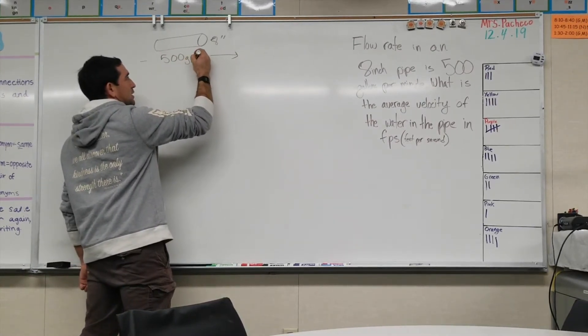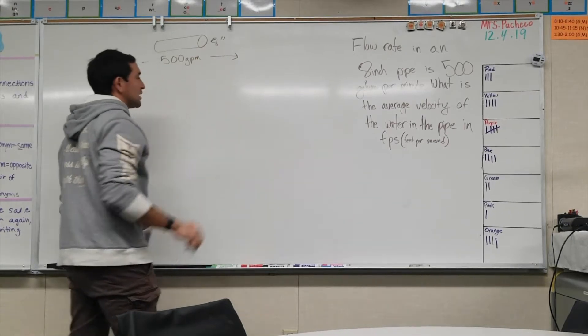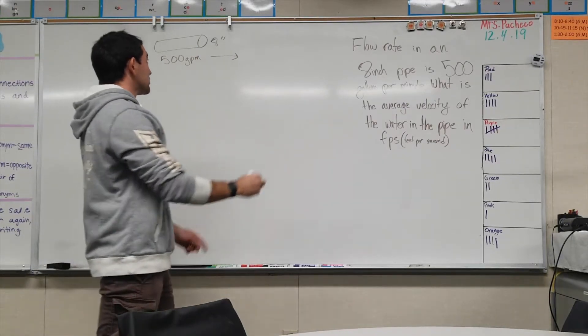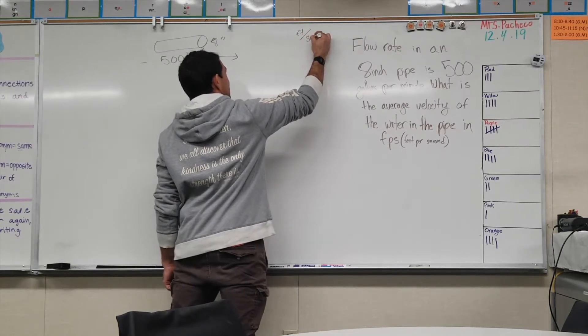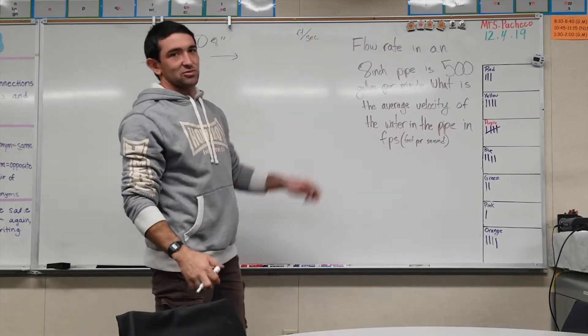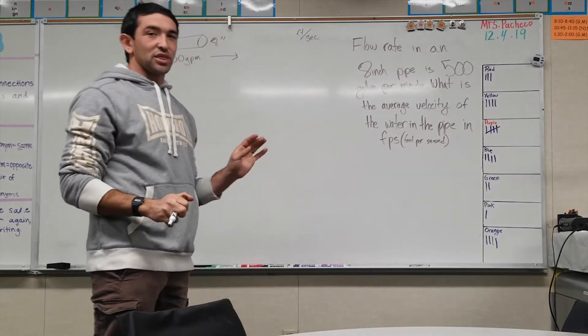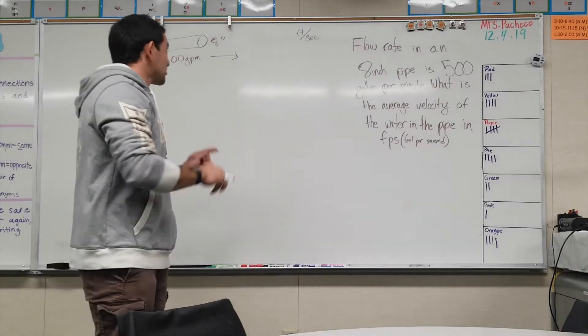The flow rate through this pipe is 500 gallons per minute (GPM), and we need to get to feet per second. That's our destination. We're only given two things, so now we got to do some problem solving to get over there.